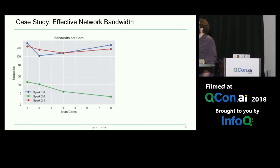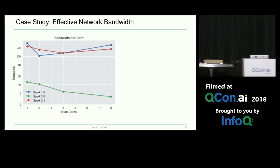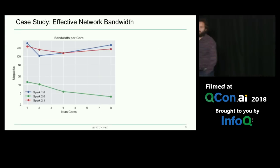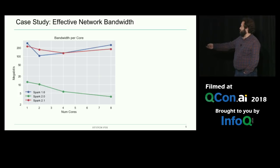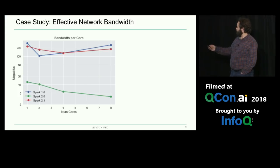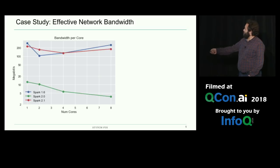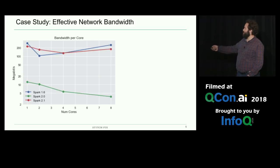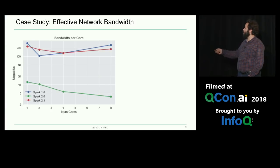Here's a real-world example. This plot shows, as a function of number of cores on one Spark executor, the achieved network bandwidth in megabit per second.